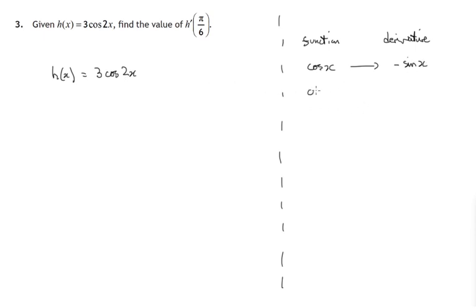Now unfortunately in this case it isn't the cosine of x, it's the cosine of something. That something happens to be 2x.